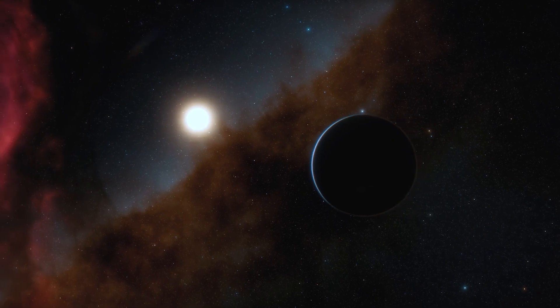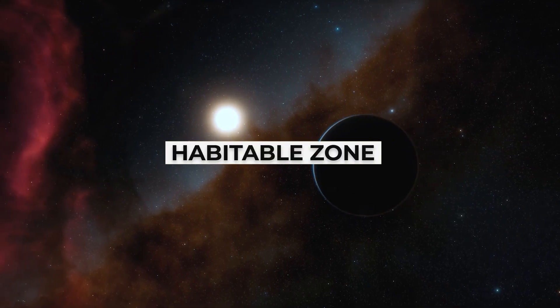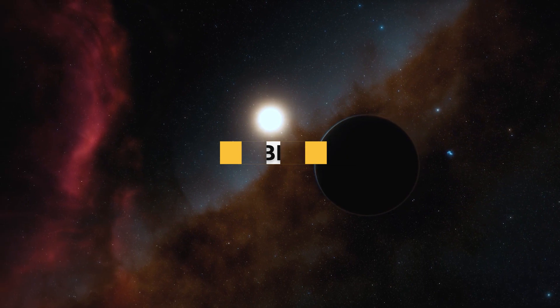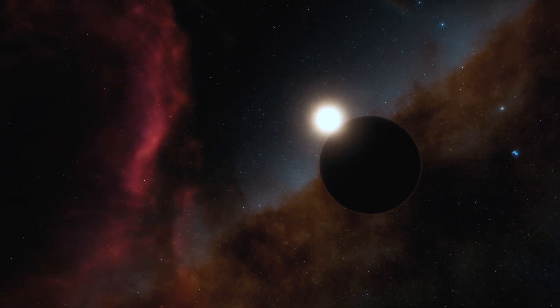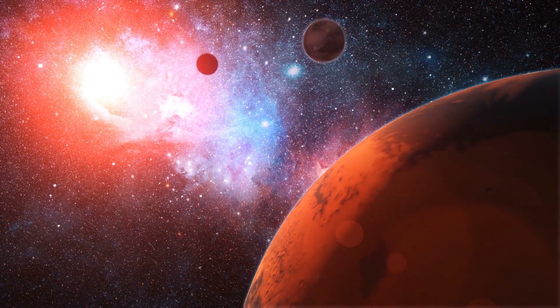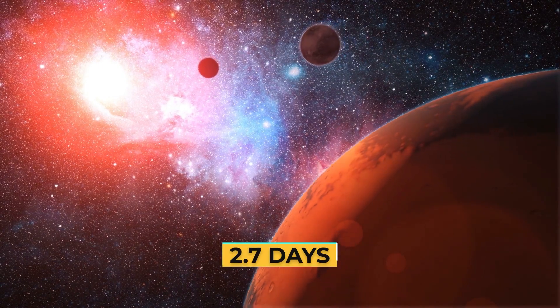This allows for the planet to comfortably stroll in the habitable zone of LP 890-9, or TOI-4306, or SPECULOUS-2, as you may like to call it. The planet completes an orbit around its host star in a time period of 2.7 days.